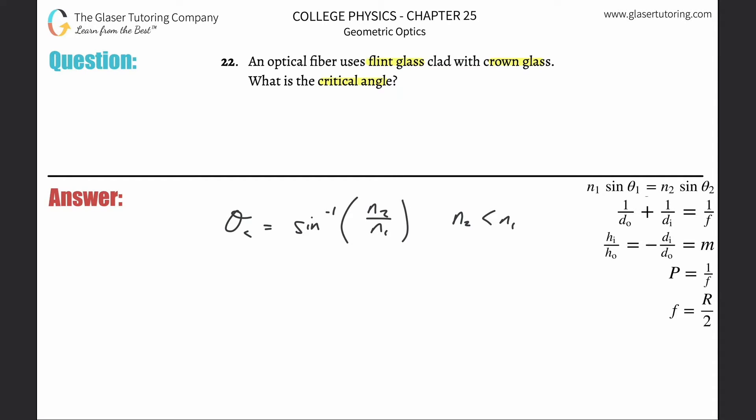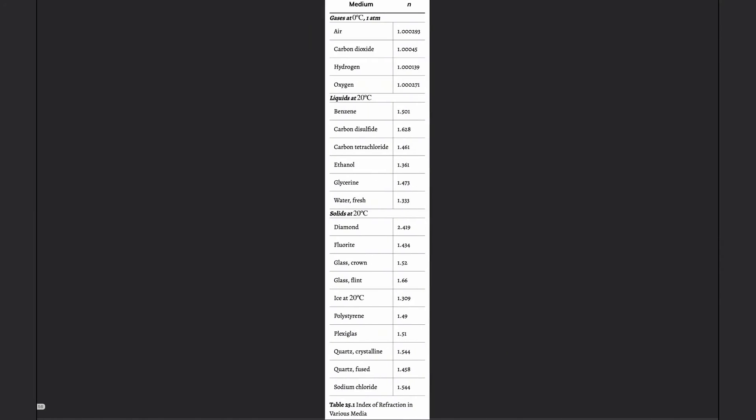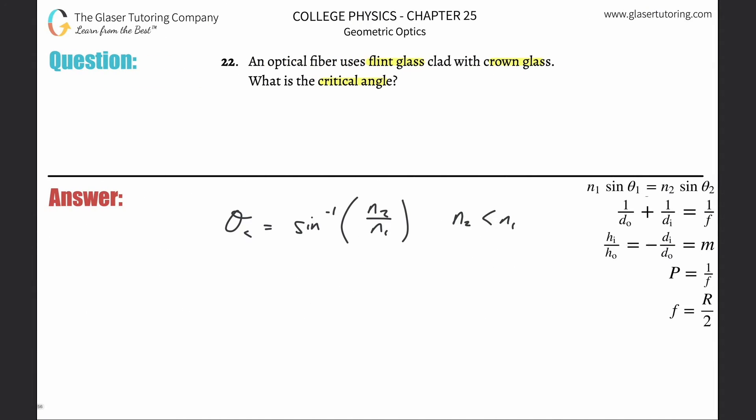So look up flint glass and crown glass. You go to your table, right here it is. Flint is 1.66, crown is 1.52. Which one's lower? The crown, right? So put it on the top: 1.52 over 1.66, inverse sine of that is going to be equal to the critical angle.